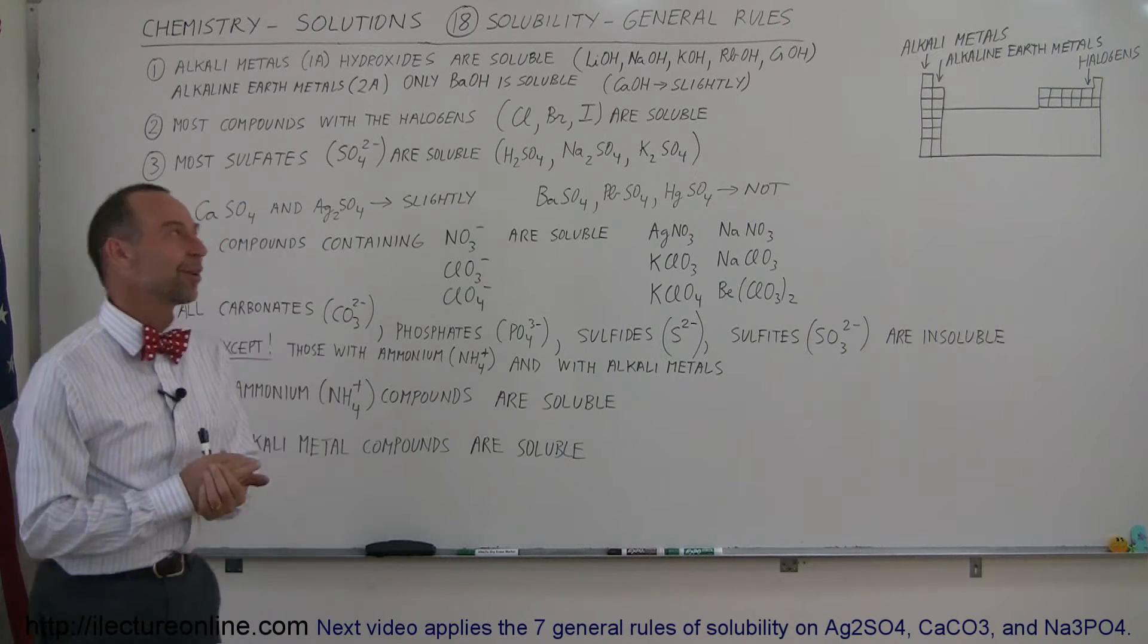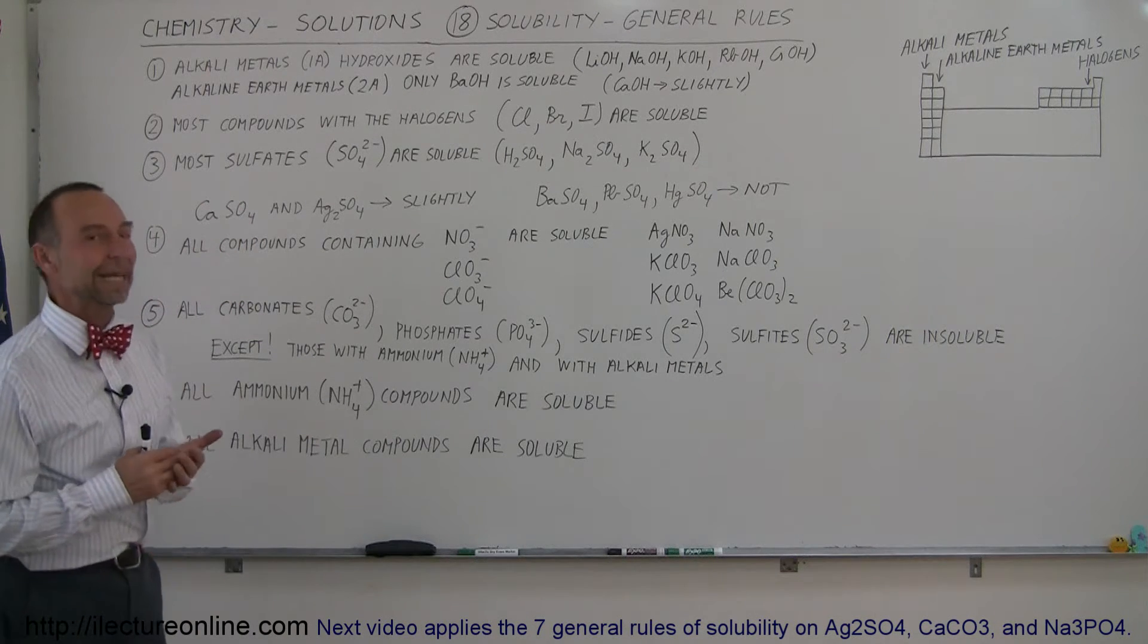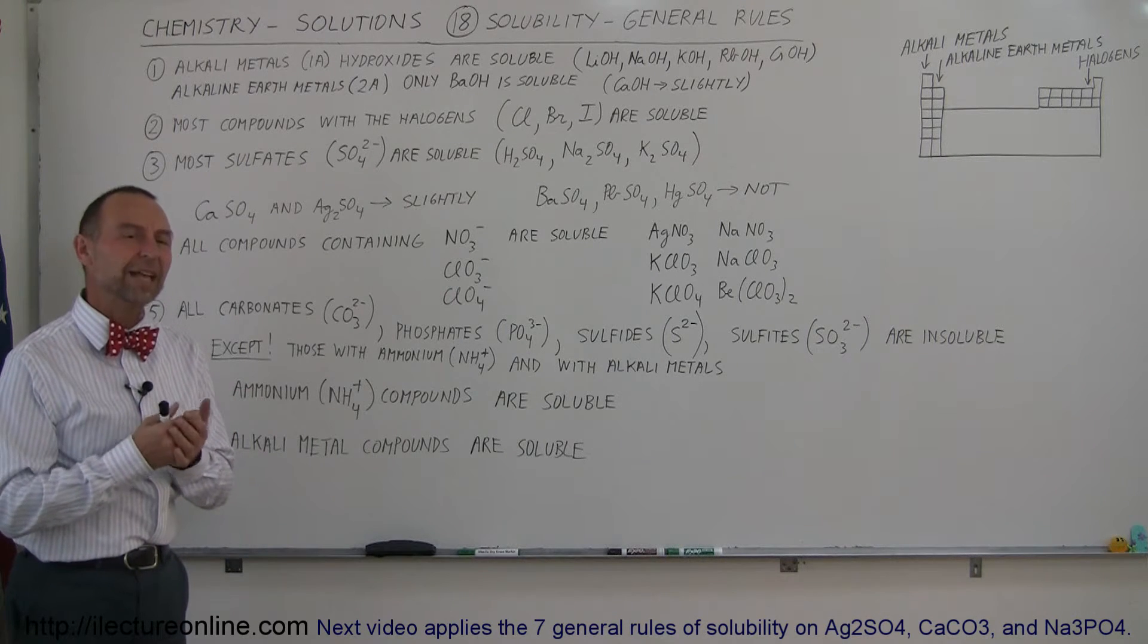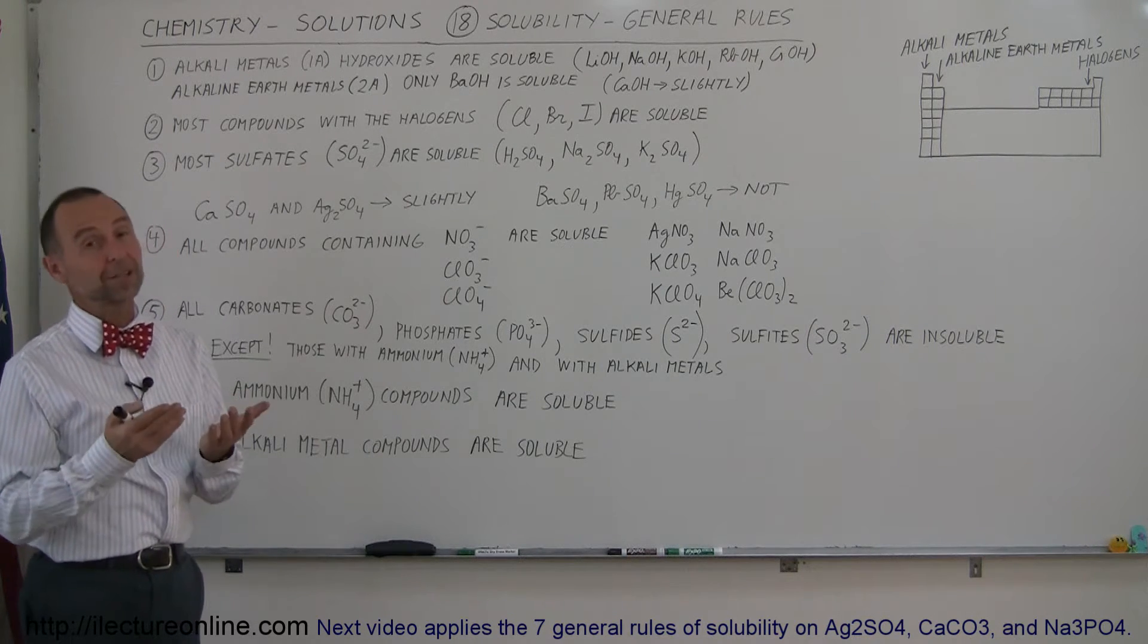Welcome to ElectronLine, and here we're going to talk about the general rules of solubility. There's seven of them, so let's go through each one. It'll help us understand which of the elements will be soluble and which ones are not.